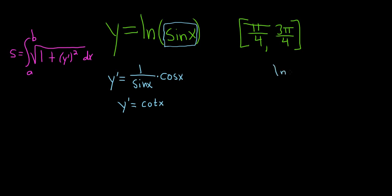The derivative of the natural log of x is 1 over x, so here it's just 1 over sine, then times the derivative of sine, which is cosine.